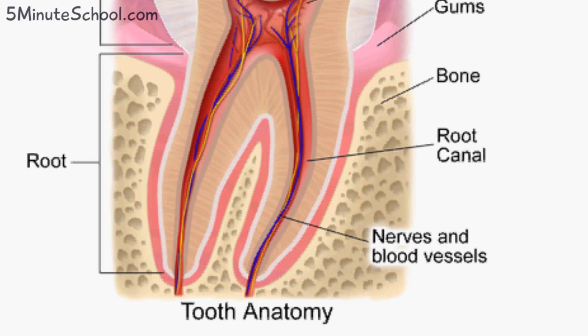Roots have canals in them, which is where blood vessels and nerves travel through to reach the pulp. Finally, the tooth is held within the bone via the periodontal ligament.